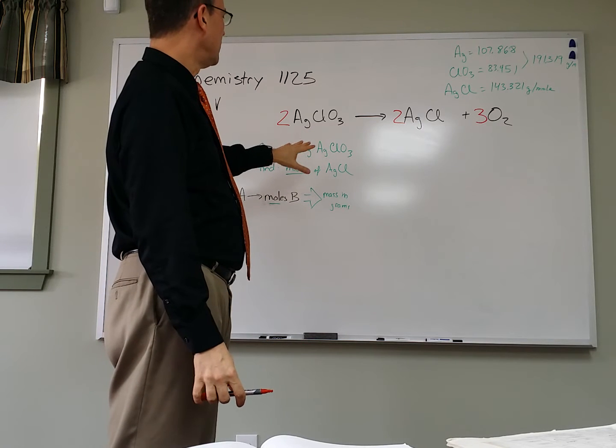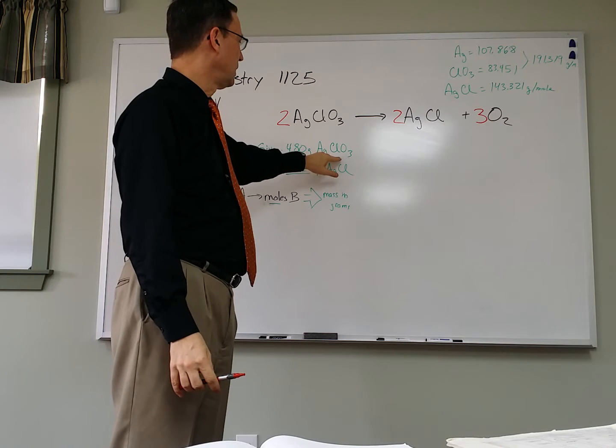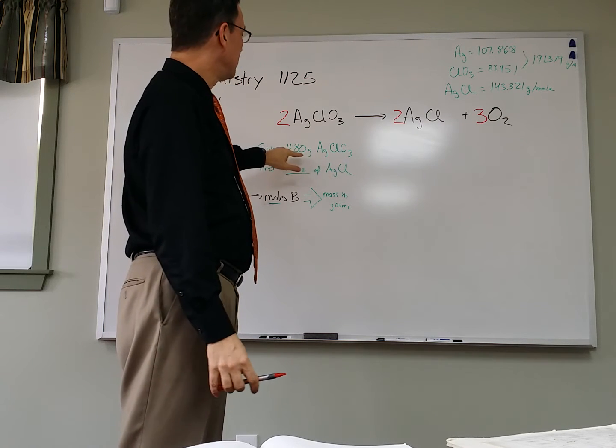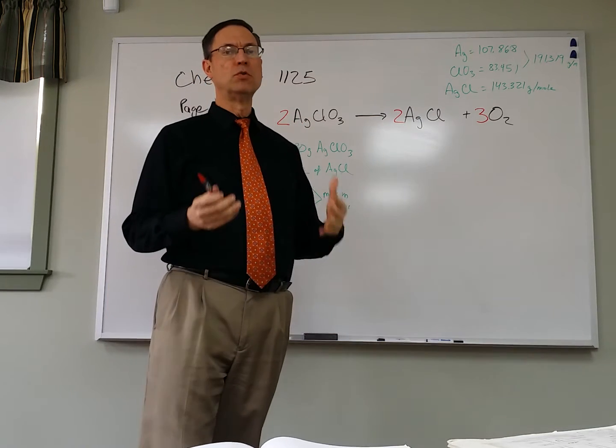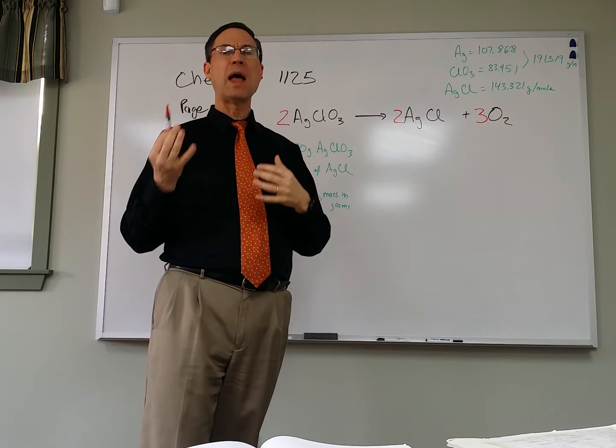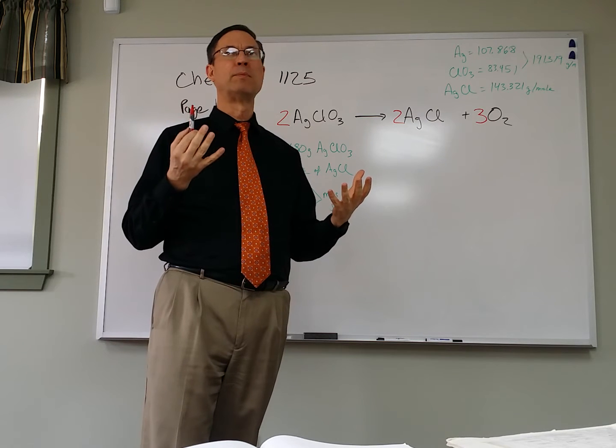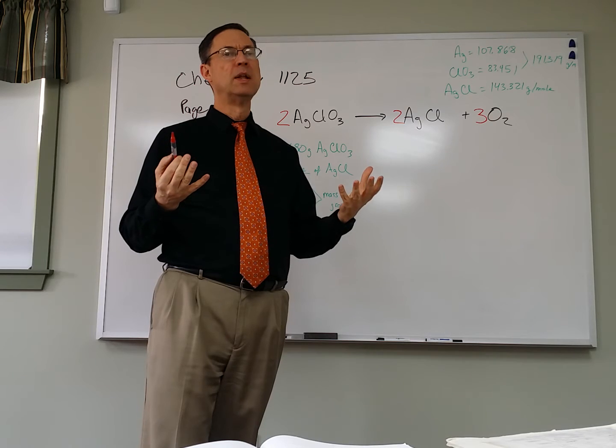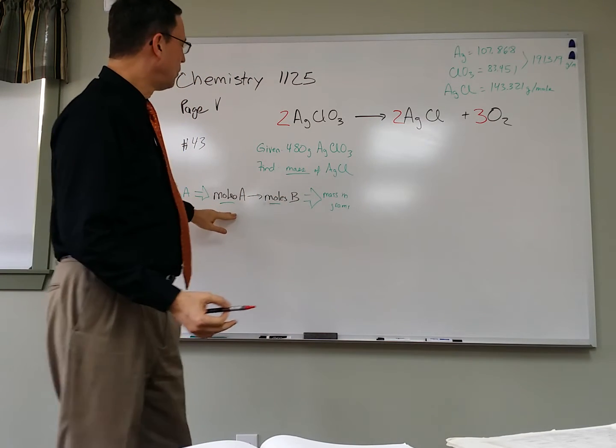Now this problem, notice, does not give us how many moles of aluminum chloride, I mean, I keep saying aluminum, silver chloride. And it gives us grams, and the only way we can do stoichiometry correctly, and this is very, very, very important, we have to compare moles to moles. That's the only thing that will work. We cannot compare grams to grams. It will not get the right answer. So we have to convert the grams into moles.